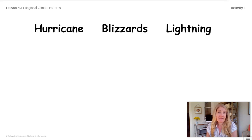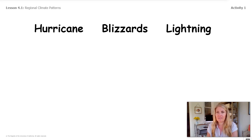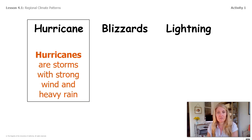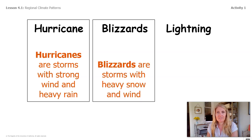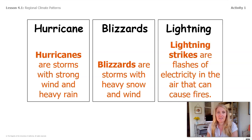One thing that helped me when making my list is that the message from the WPO said the hurricane had heavy wind and rain. So I think that means hurricanes are storms with strong wind and heavy rain. Blizzards are storms with heavy snow and wind. And lightning strikes are flashes of electricity in the air that can sometimes cause fire.